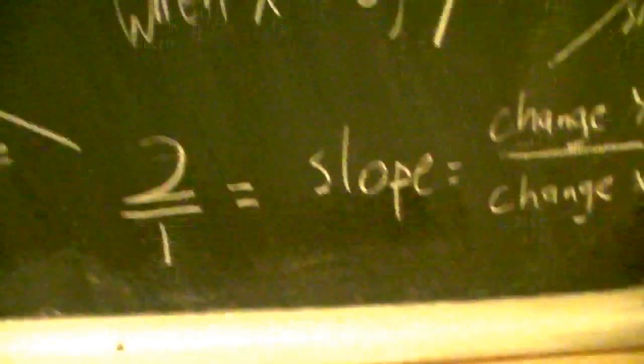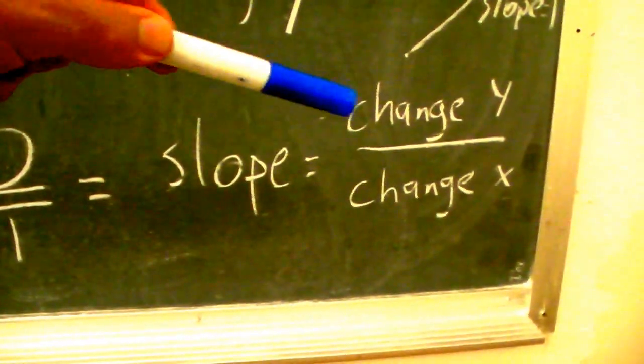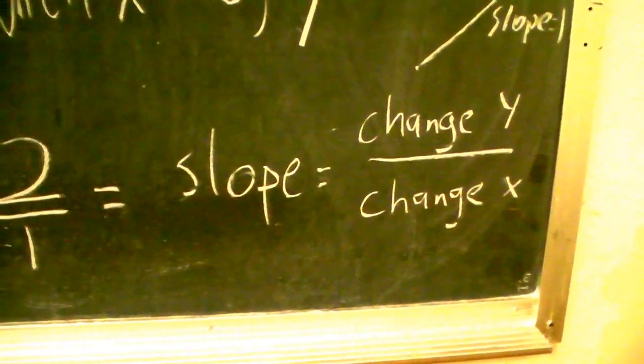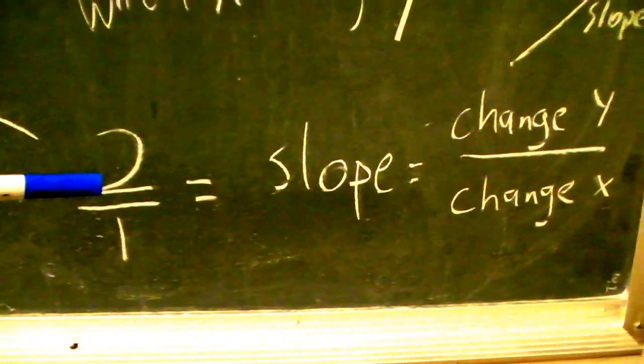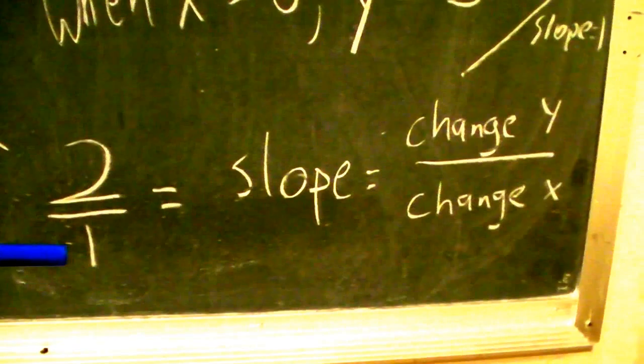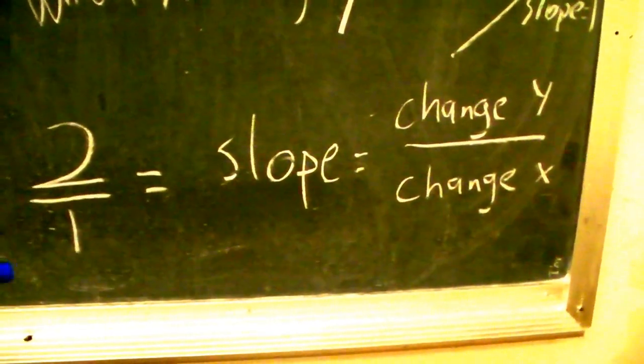The reason is, slope is the change in the y's over the change in x. And when you have a slope of 2, it means the y goes up 2 and the x goes up only 1. That's positive.